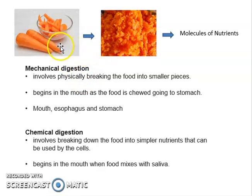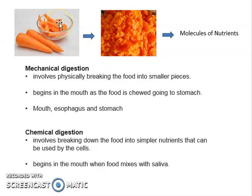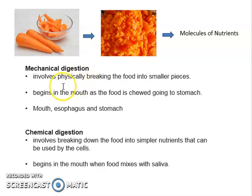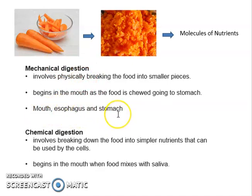Imagine a carrot goes into your mouth. From this portion, you bite it and it turns to a smaller piece. And then when you chew it properly, it becomes even smaller — that is mechanical digestion. Mechanical digestion starts in our mouth, esophagus, and stomach.